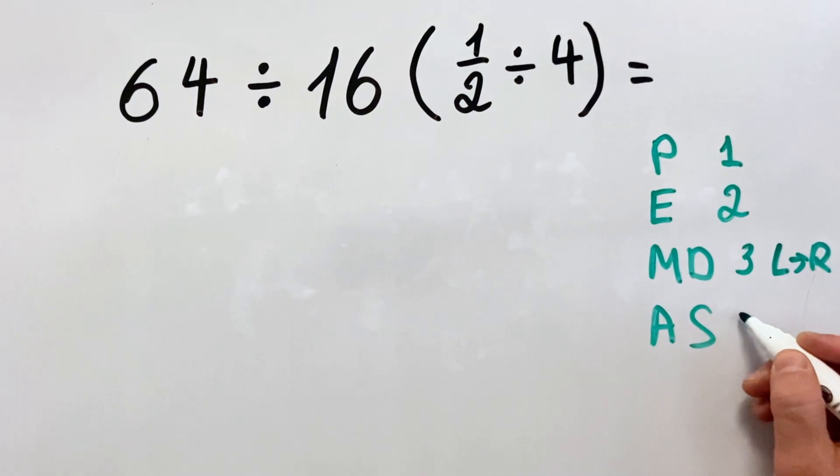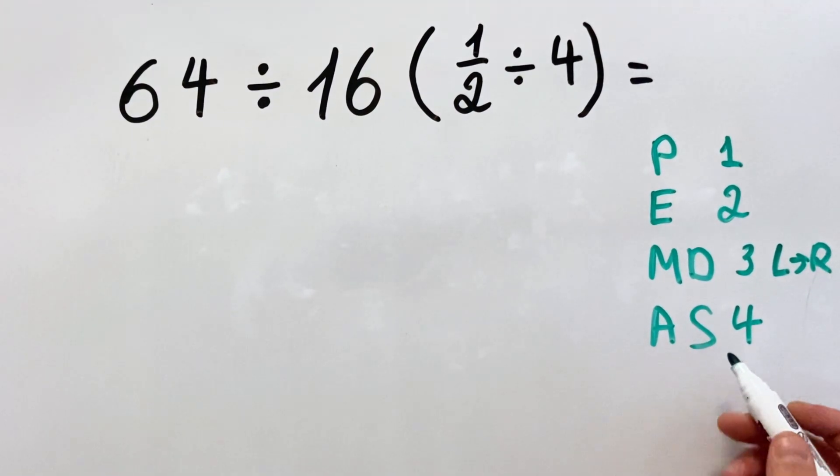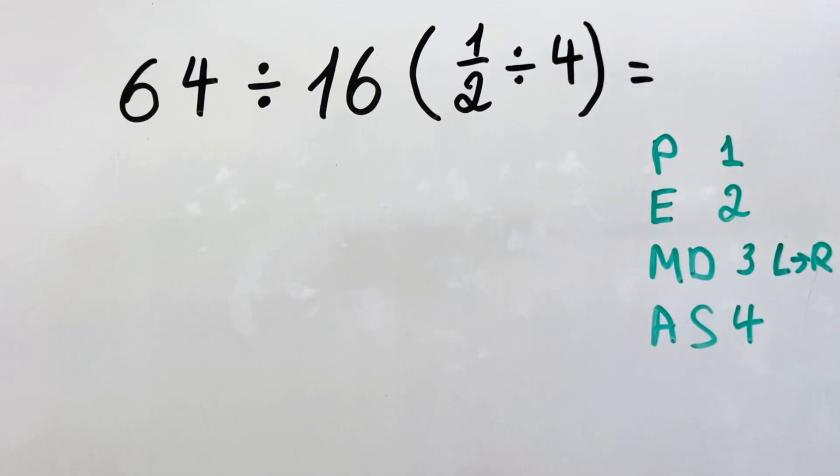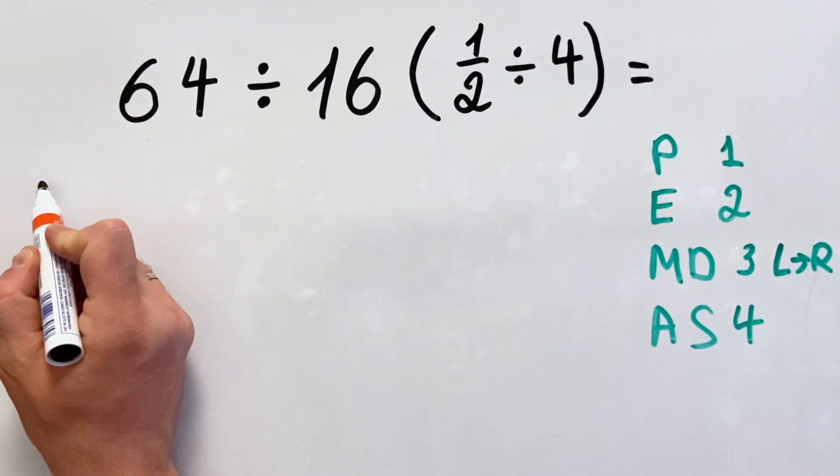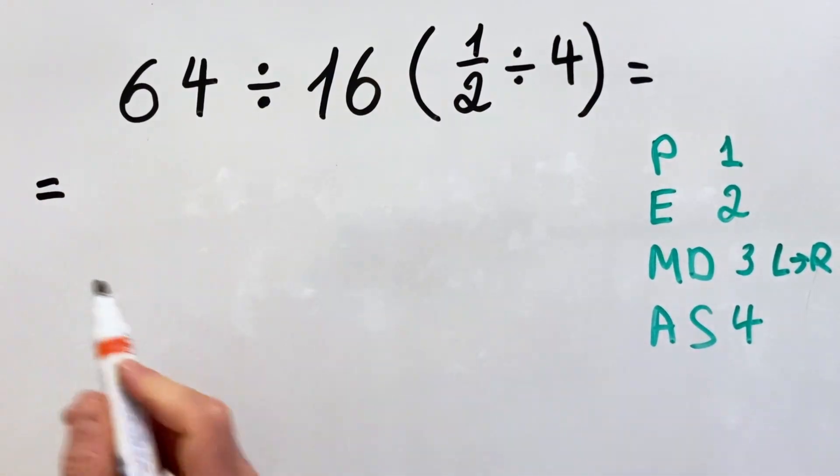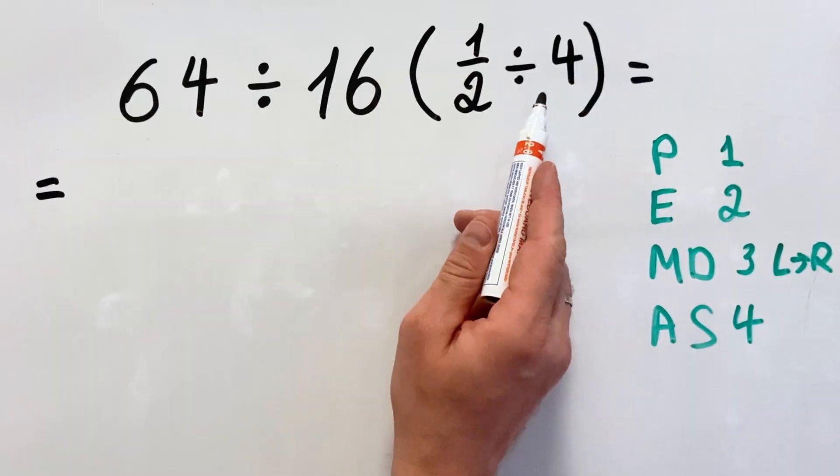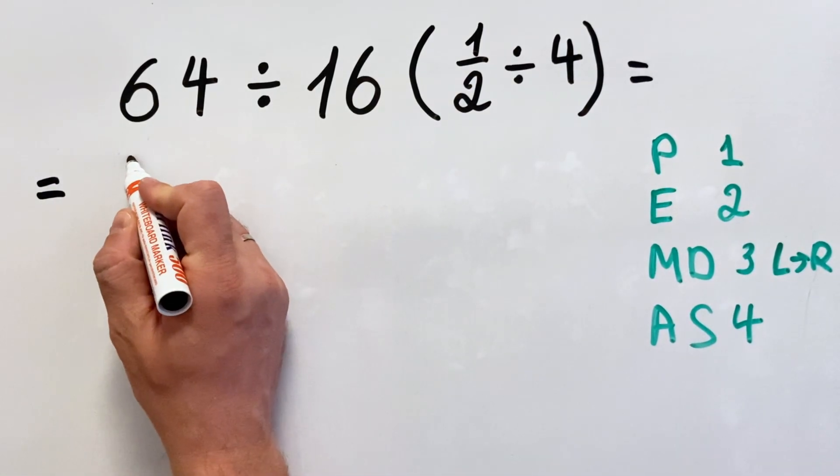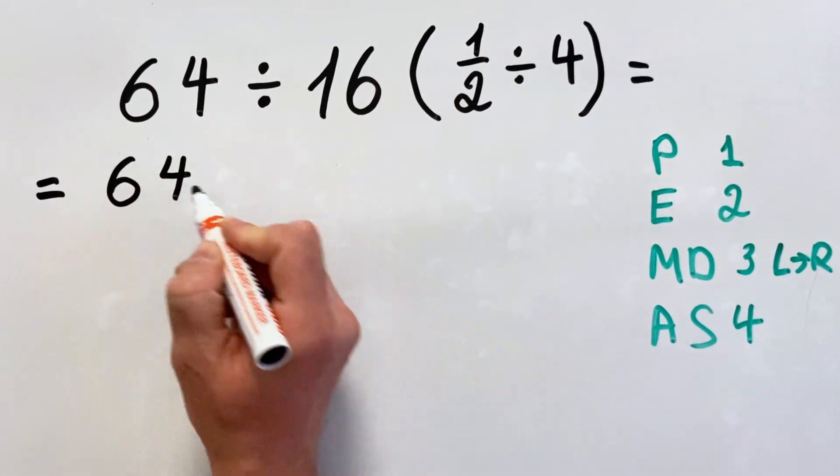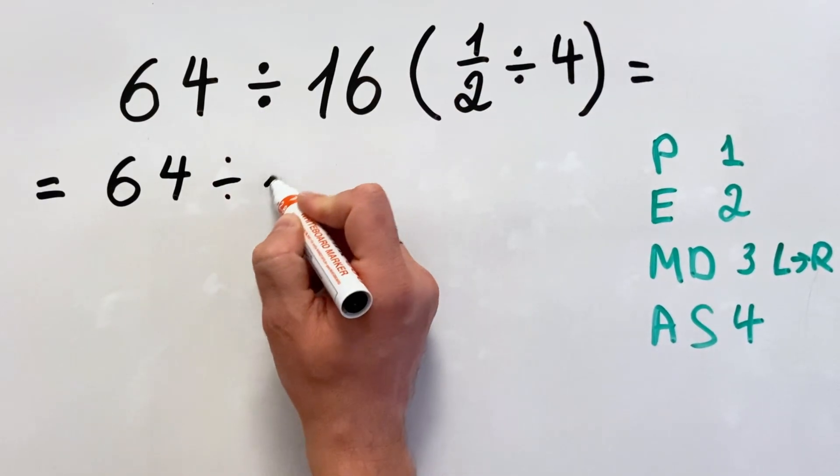And in the fourth place is addition and subtraction. Here we don't have it. Let's solve this equation. Firstly we'll do what's inside that parenthesis, so we have 64 divided by 16.